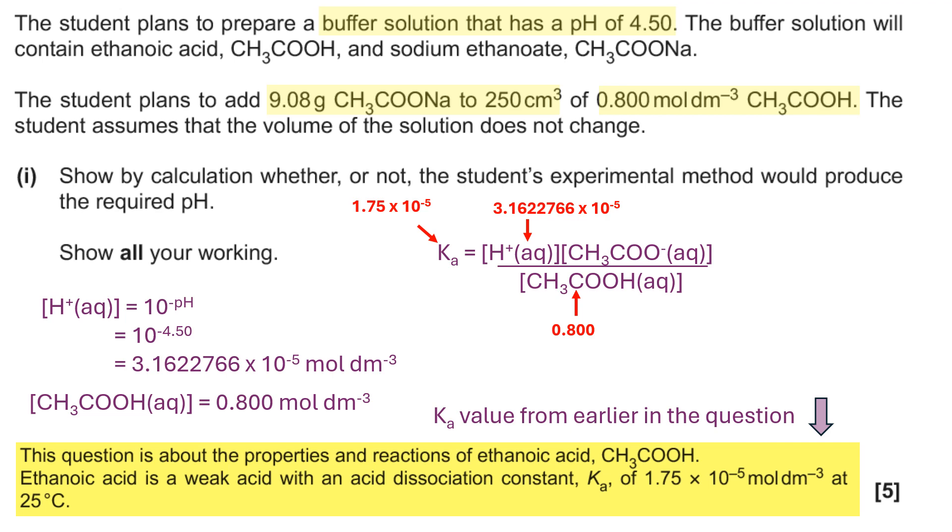There's two steps here to work out that term. Firstly, work out the number of moles of sodium ethanoate in 9.08 grams, and then you convert that to a concentration by doing n over V, so you're rearranging n equals C times V. Now because it's 250 centimeters cubed, that needs to be divided by a thousand to turn it into decimeters cubed so you can get the concentration in moles per decimeter cubed.